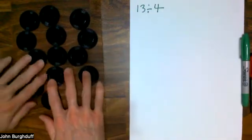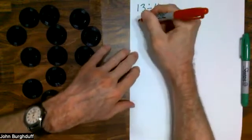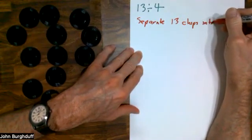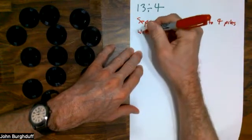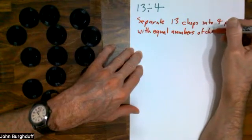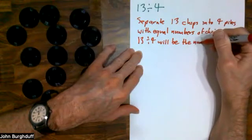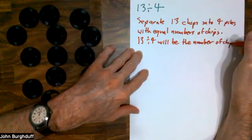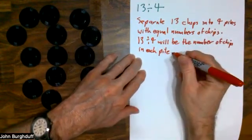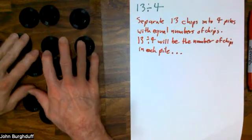What I have here is 13 of these black integer chips, and I want to illustrate 13 divided by 4. The way I'm going to do that is I'm going to try to separate 13 chips into 4 piles with equal numbers of chips. 13 divided by 4 will be the number of chips in each pile — there's actually going to be a little bit more to that, which I'll explain.